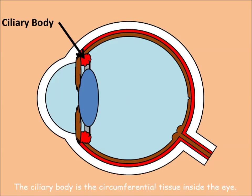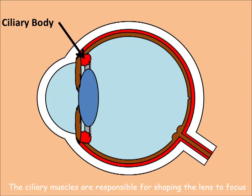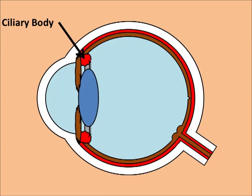The ciliary body is the circumferential tissue inside the eye. Its epithelium produces the aqueous humor. The ciliary muscles are responsible for shaping the lens to focus light on the retina.